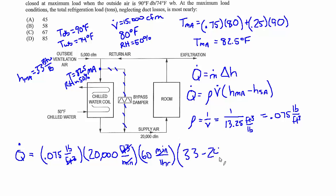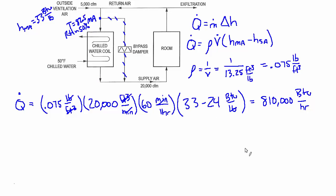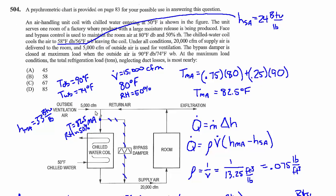33 minus 24, and that has units of BTU per pound. That gets rid of pounds, so we should be left with BTU per hour, and that's 810,000 BTU per hour. They asked for the answer in tons, so to convert that to tons we have to divide it by 12,000 BTU per hour per ton. BTU per hour goes away, we're left with tons. Q̇ equals 67.5 tons, pretty close to answer choice C.